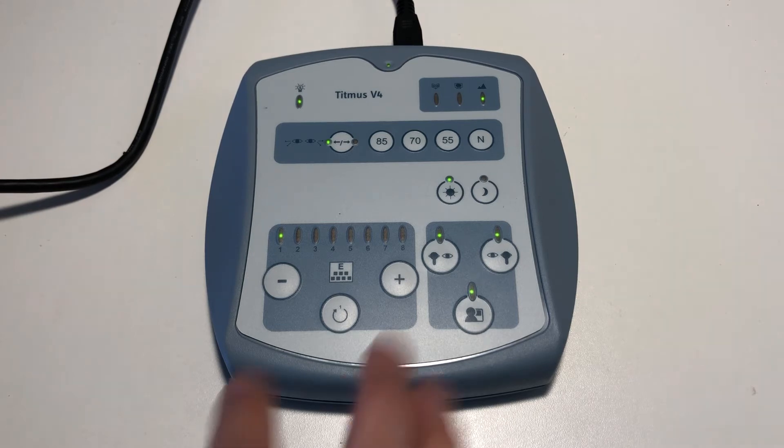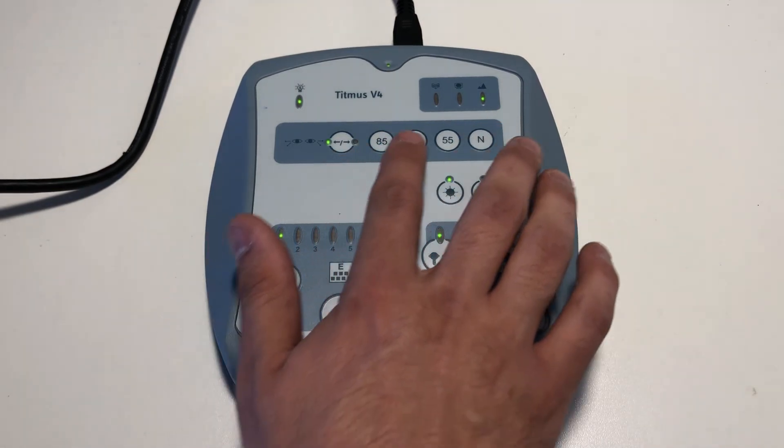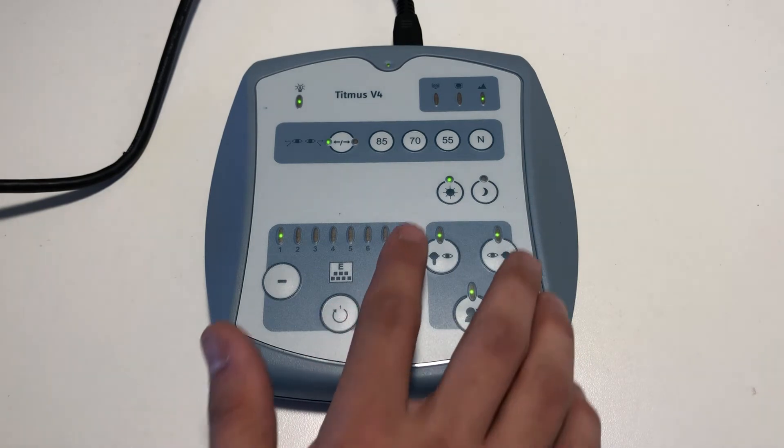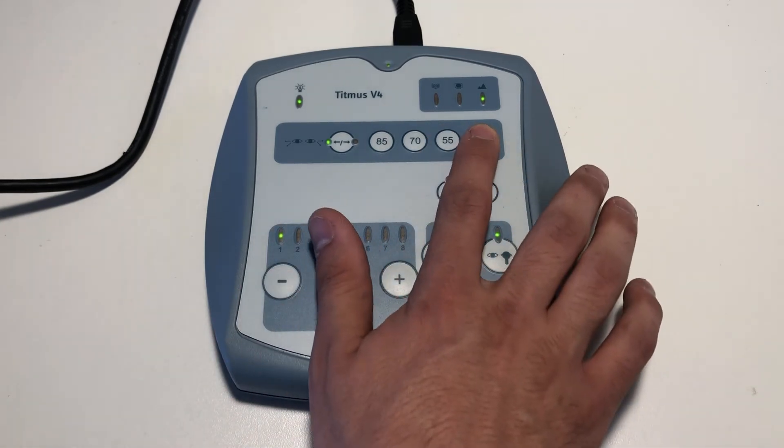We will test for temporal vision at 85, 70, and 55 degrees, followed by a 45 degree nasal test.